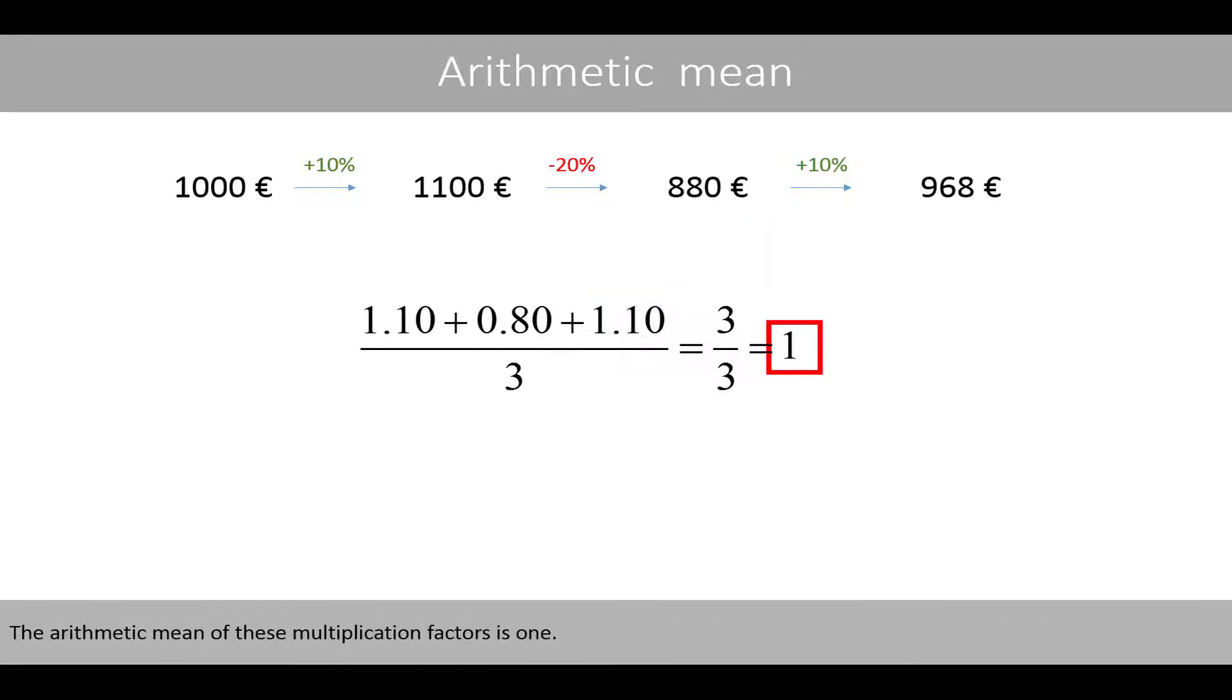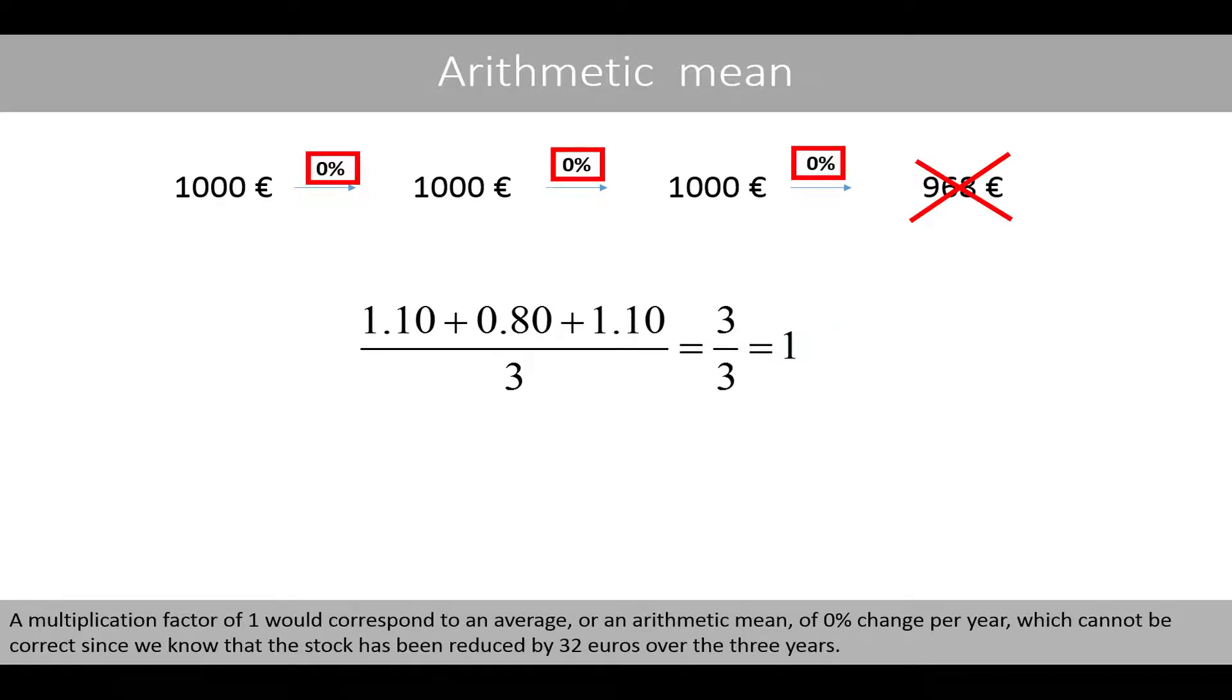The arithmetic mean of these multiplication factors is 1. A multiplication factor of 1 would correspond to an average or an arithmetic mean of 0% change per year, which cannot be correct since we know that the stock has been reduced by 32 euros over the three years.